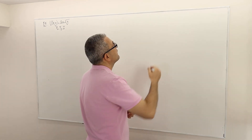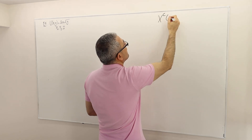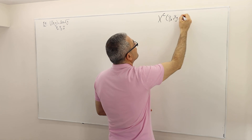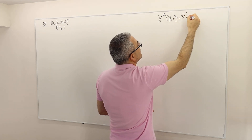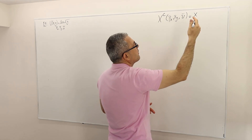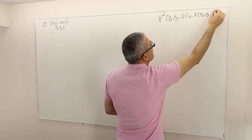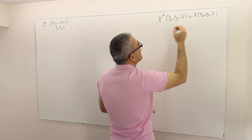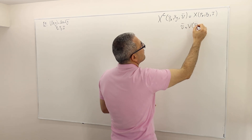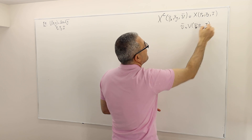The Hicksian demand curve, calculated at PX and PY assuming two goods and U-bar, is in fact equal to the Marshallian demand curve, calculated under PX, PY prices and income, whenever the utility level U-bar is equal to the indirect utility level at PX, PY, and income.